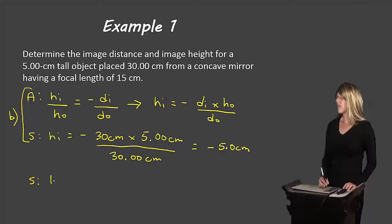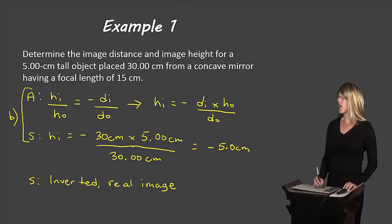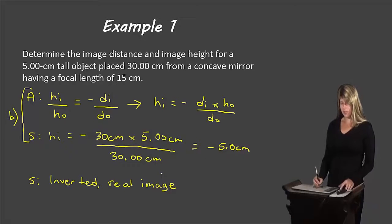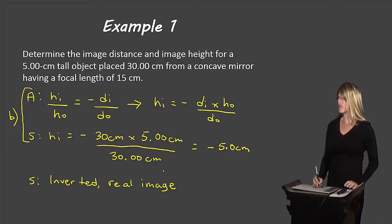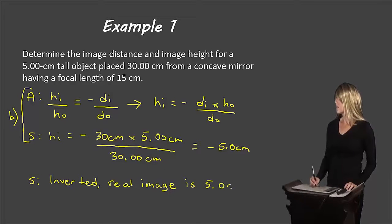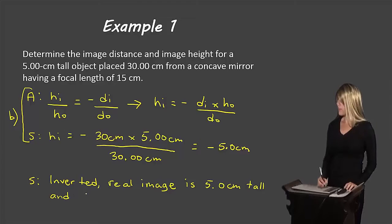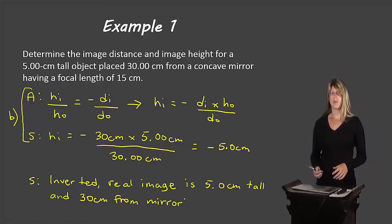So the image is an inverted real image. How do we know? HI is a negative value, which means the image is inverted. We know it's real because DI from Part A was a positive value, and DI is positive for real images. So the inverted real image is 5.0 centimeters tall and 30 centimeters from the mirror.